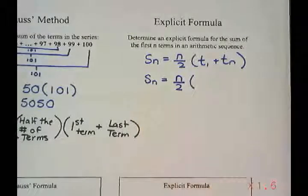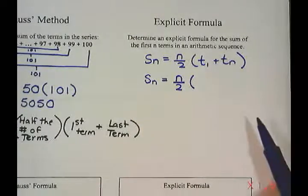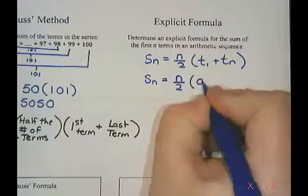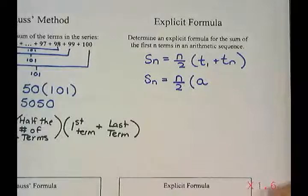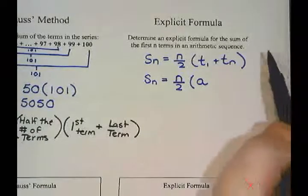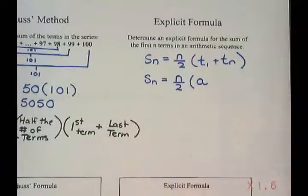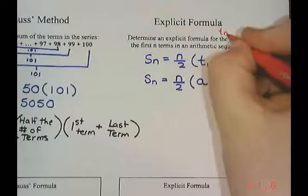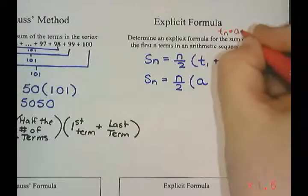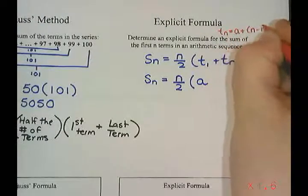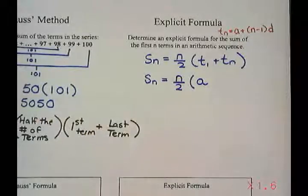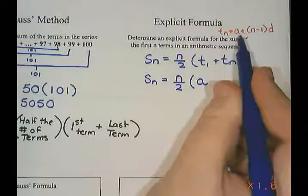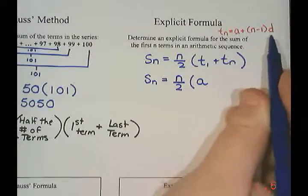Now term 1 is the first term, and in our other formula for arithmetic sequences, we use the letter a to represent term 1. And when we did arithmetic sequences, we said there was a formula that we could use, where Tn was a plus n minus 1 times d. So what I'm going to do here is instead of term 1, I'm going to put in a. And instead of Tn, I'm going to put in a plus n minus 1 times d.